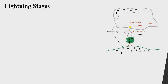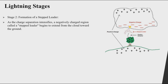The next step is the formation of a stepped leader. After separation of electric charges, the negative charges at the bottom of the cloud induce and encourage positive charges to accumulate on the ground, since negative and positive charges attract each other. Positive charges start accumulating on the surface of the ground, and an electric field forms between the negative charges in the cloud and the positive charges on the ground.